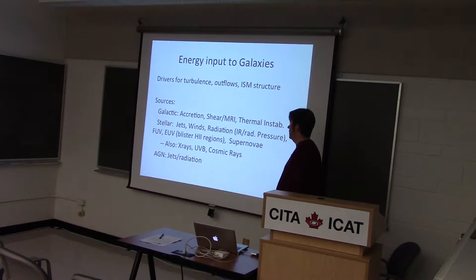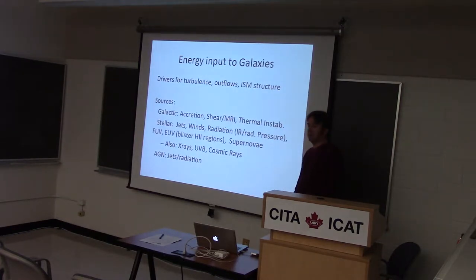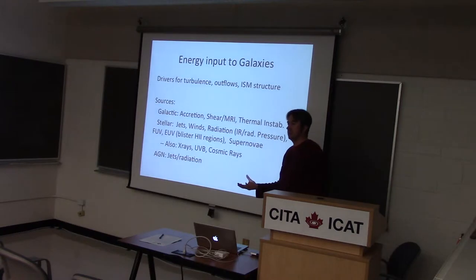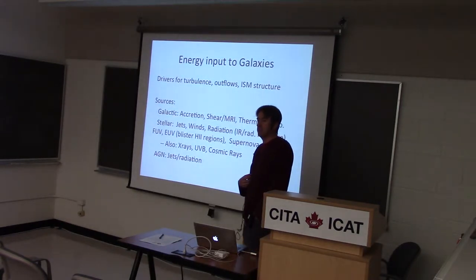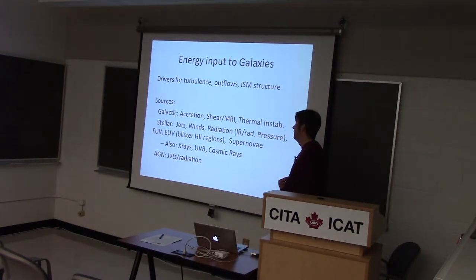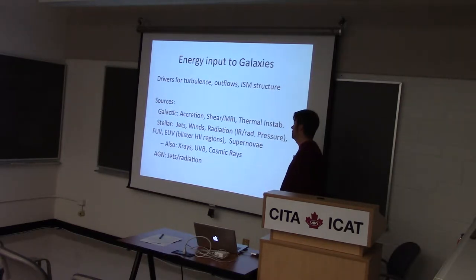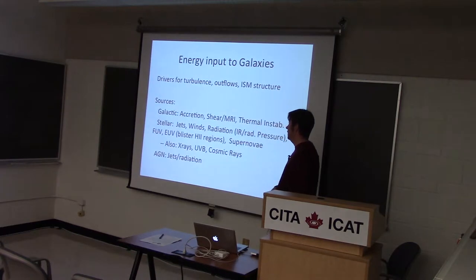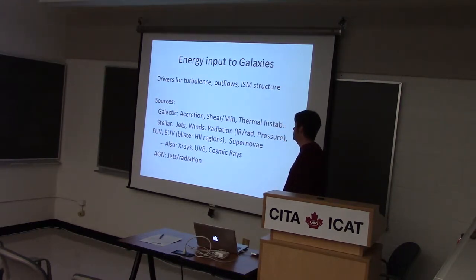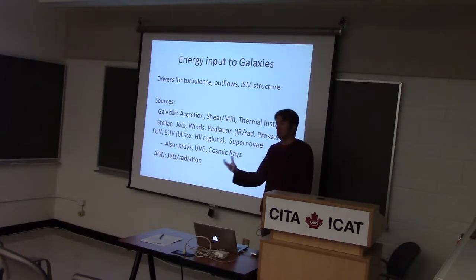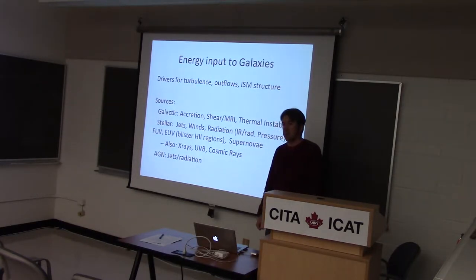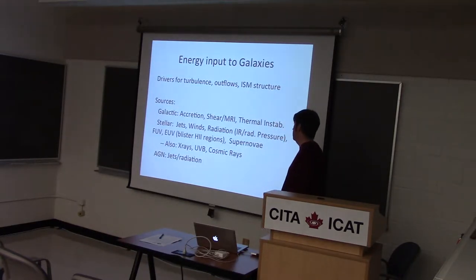These energy inputs do a lot of important things — they're non-trivial. They're drivers for the turbulence. The ISM is ubiquitously turbulent; it's supersonically turbulent, so the energy budget is a lot of its kinetic. It drives outflows which are very important for mediating the growth of galaxies and their contents, and also ISM structure in terms of cold phases, hot phases, and all the interesting things that drive people who observe star-forming regions.